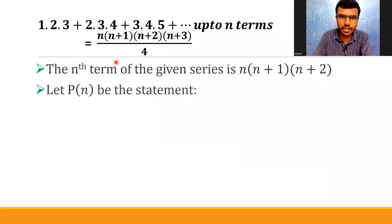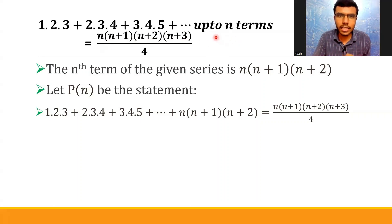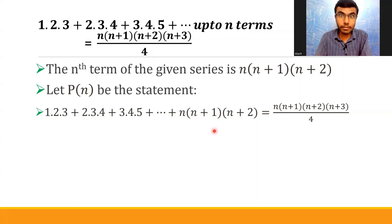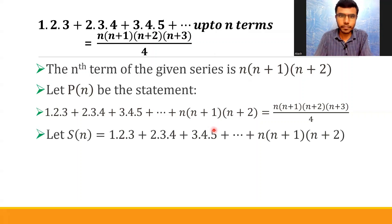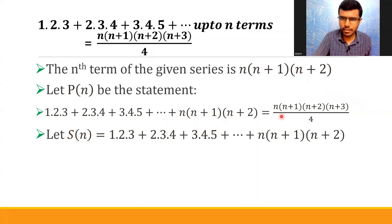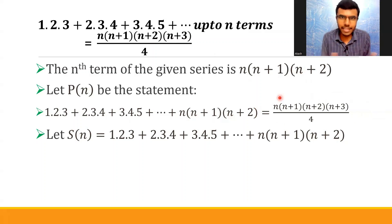Let P(n) be the statement. I'm going to write the given equation as it is, just keeping the nth term I already found out. I'm going to take the sum on the left-hand side as S(n). So naturally S(n) is equal to the LHS, and naturally it is equal to the RHS also.